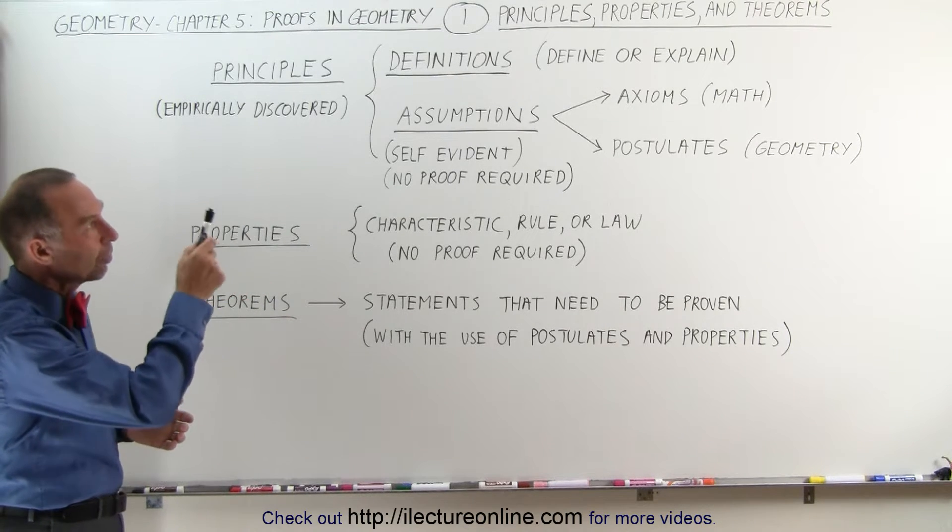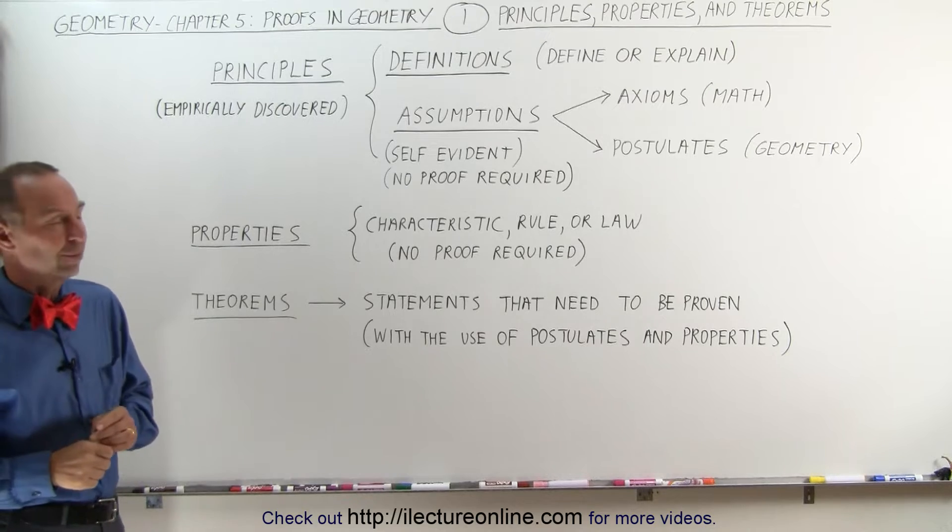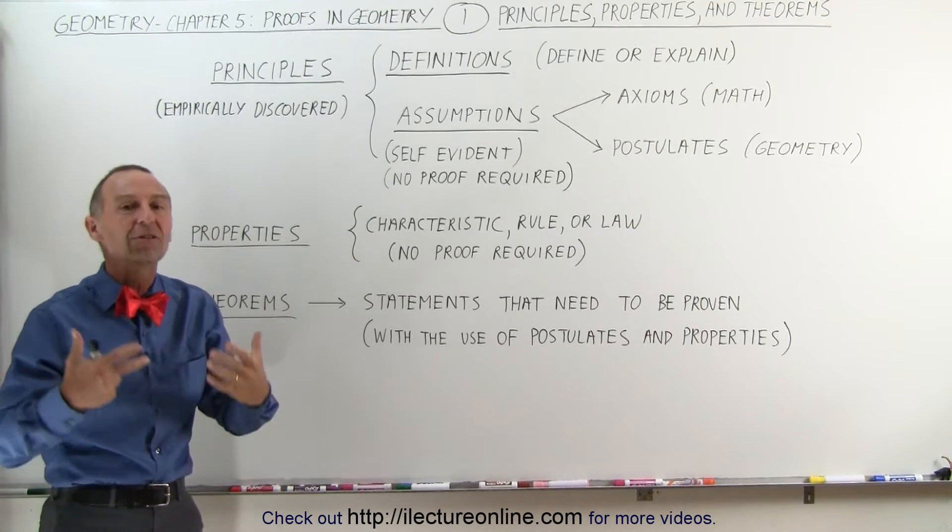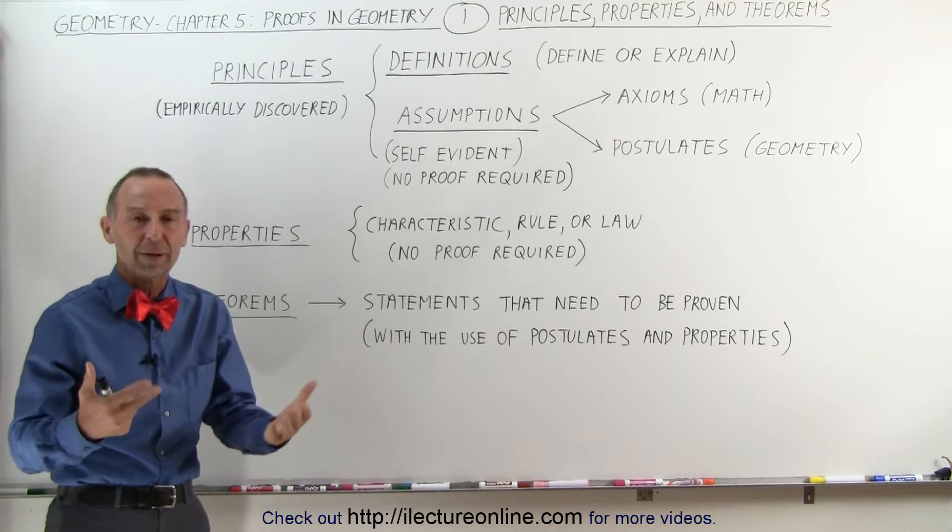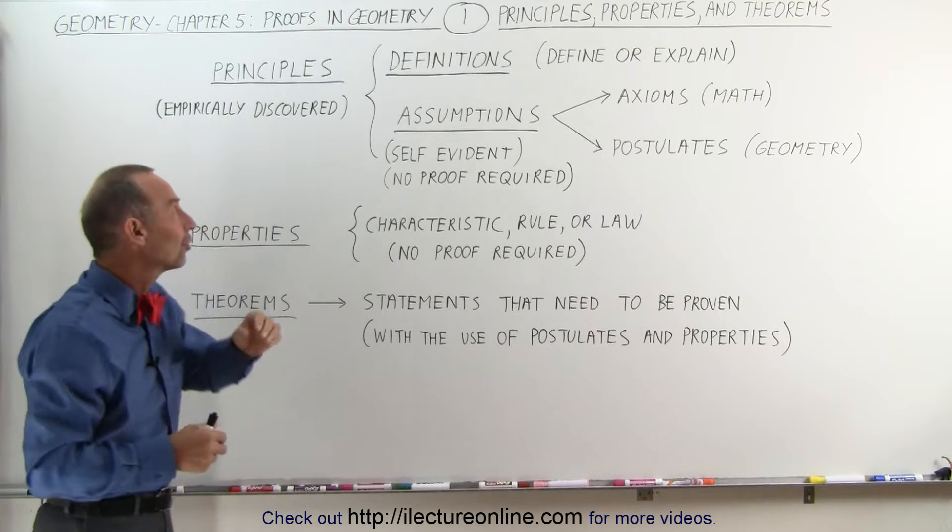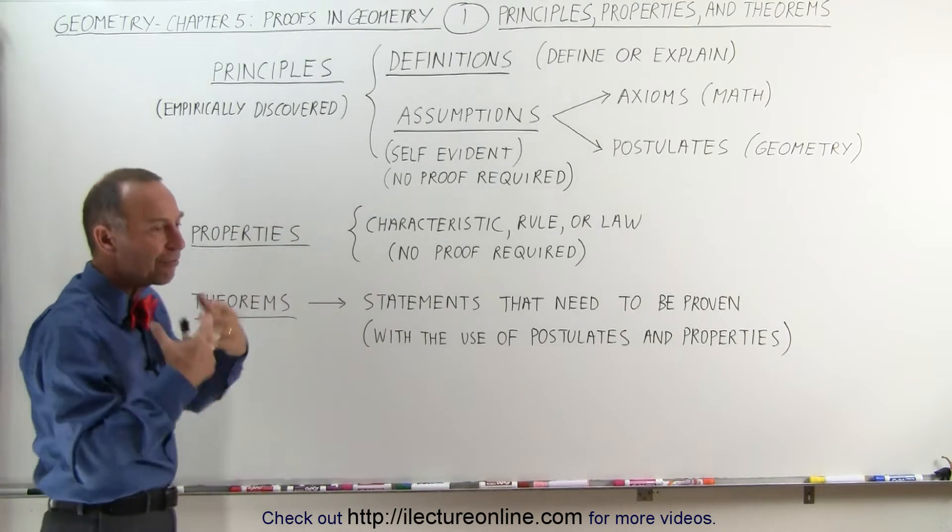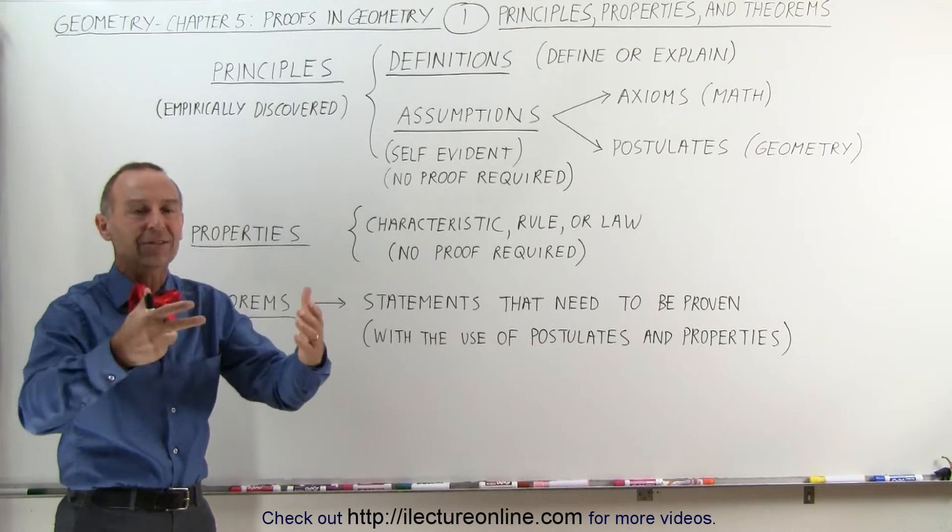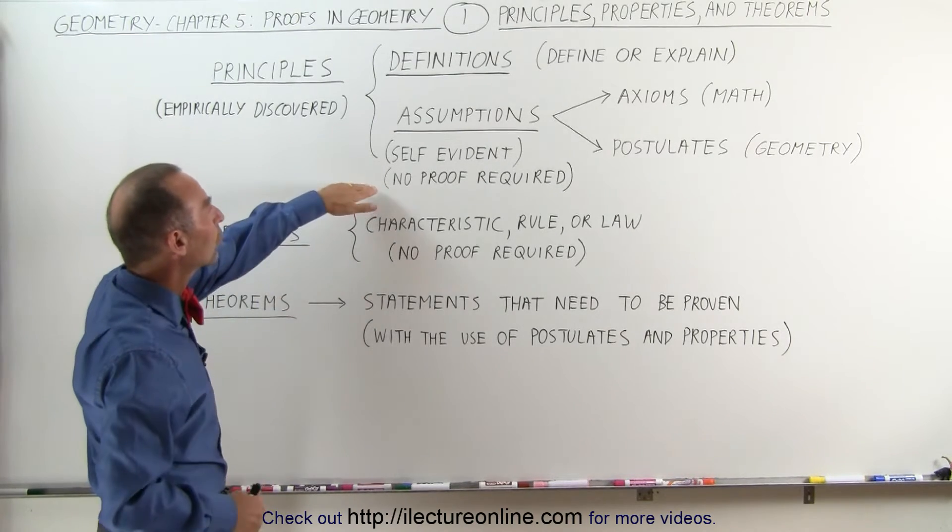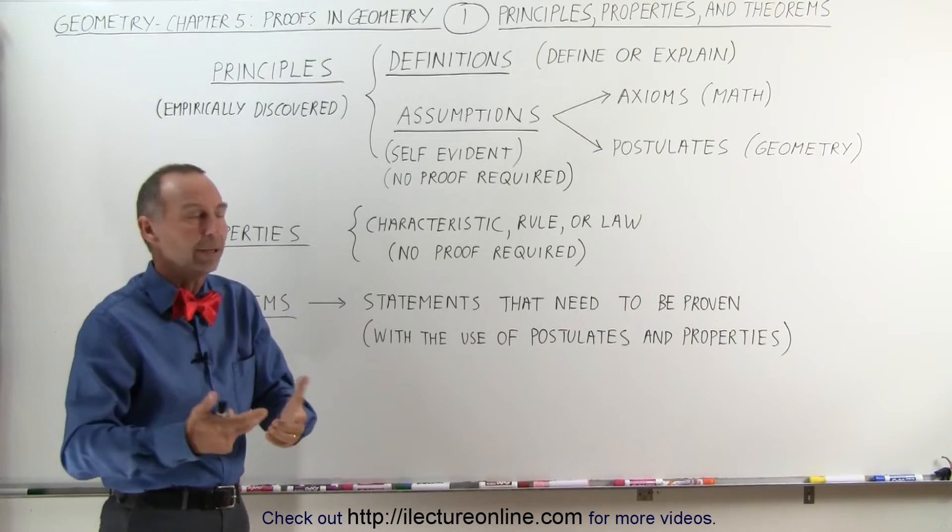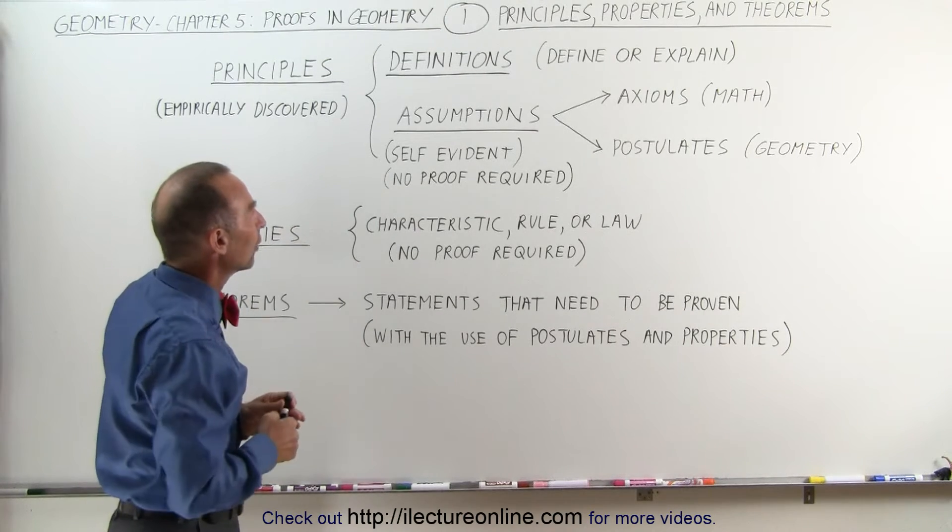We're going to talk about principles, properties, and theorems. Principles, those are things that are empirically discovered, discovered through experiment, discovered through thinking about it. You discover things, and those are called principles. They came first. They set certain rules and regulations about what's going to come next. Those do not require any proof. They're self-evident. You just know that they are. And they fall in two categories.